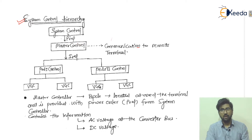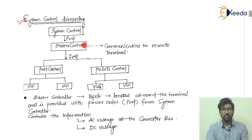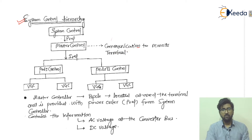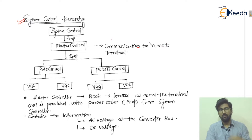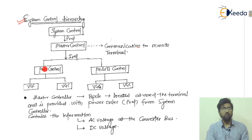This is the basic control scheme applied here. The reference power is taken from the system control and given to the master control, so P_ref is the input to the master control. The master control handles communication to the remote terminal, which is the far end of your system. It then provides the I_ref, the reference current, which is divided into pole one control and pole two control.